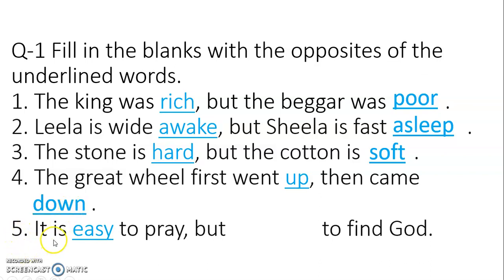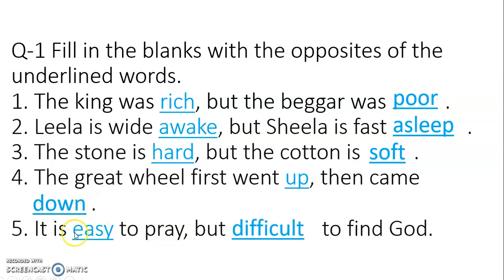Number five: it is easy to pray — very simple, very easy to pray to God. So the opposite of easy is difficult. But it is difficult to find God. The completed sentence: it is easy to pray but difficult to find God.